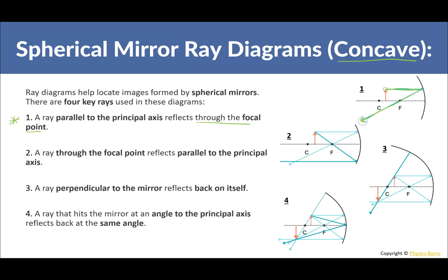The second ray: a ray through the focal point reflects back parallel to the principal axis. So if you draw the ray going through the focal point, it reflects back horizontally. With these two rays, we can see where they converge, and that's where the image forms — giving us an inverted image.